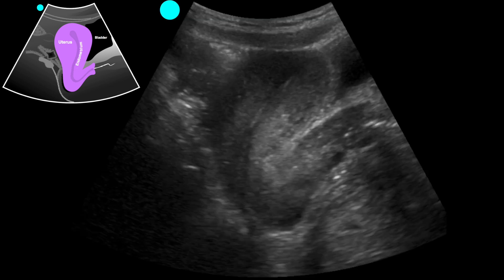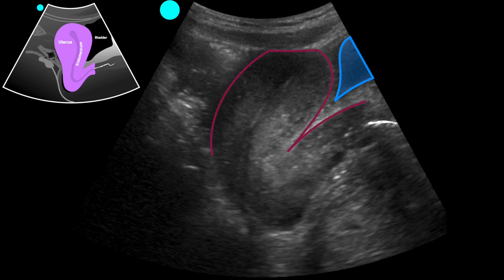The first view is the uterus long axis. You can see the uterus takes up the majority of the screen. Sometimes it's not as obvious, so we recommend using the bladder as a reference tool as well as the vaginal stripe. Outlined here are the contours of the uterus, and our focus should be on the endometrial stripe. As we scan through, we want to look for any intrauterine contents such as a gestational sac.